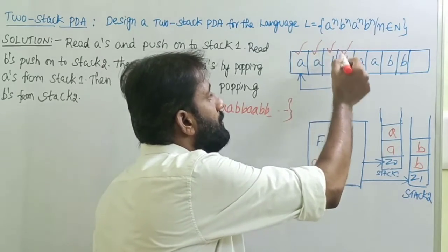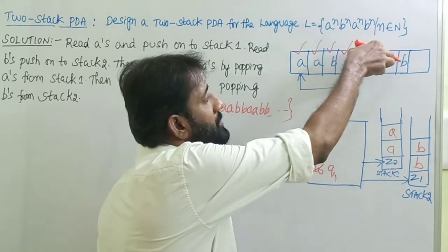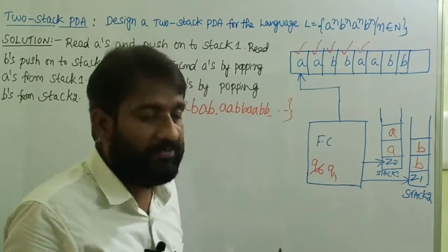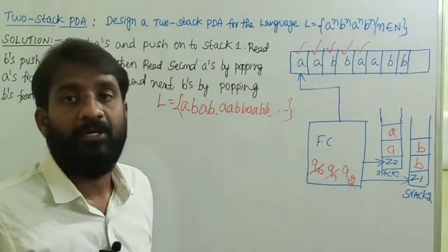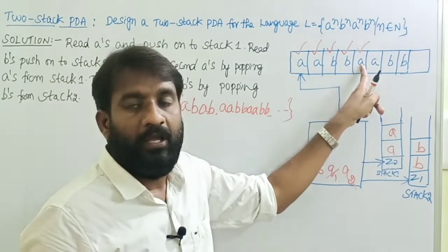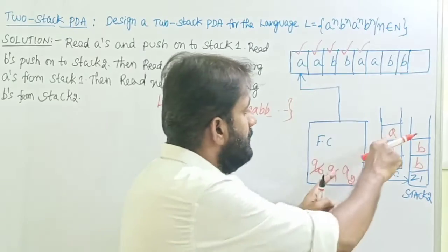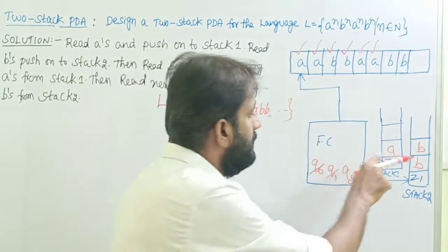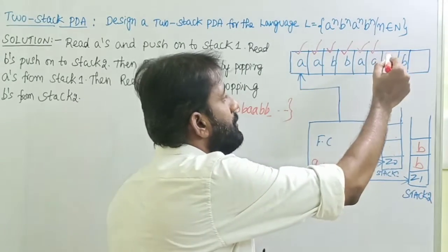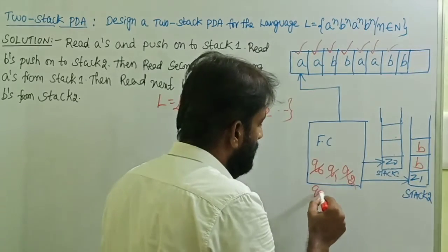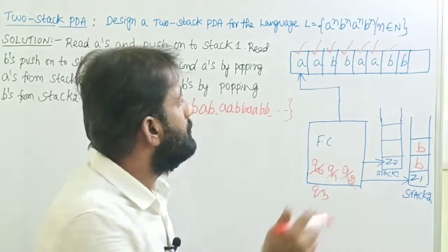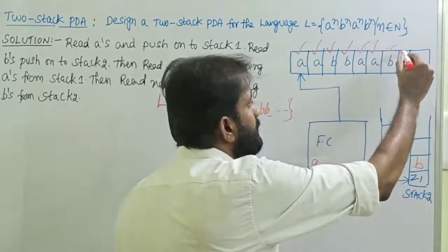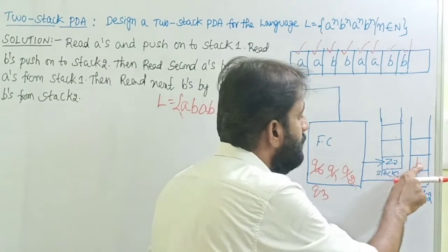So the first a's are completed and the first b's are completed. Then the second a's are starting. The logic is: this set of a's is equal to the second set of a's, and this set of b's is equal to the second set of b's. Now read 'a' by changing state from q1 to q2 to ensure we are reading the second a's. Read 'a' and pop the top element from stack one — that is 'a' — without doing any operation on stack two. Then read the next 'a' and pop the top element from stack one without doing any operation on stack two. Now the second b's are starting. Change state from q2 to q3 for every 'b', popping the top element from stack two without doing any operation on stack one. Then for the next 'b', pop the top element from stack two without doing any operation on stack one.